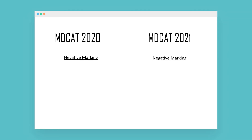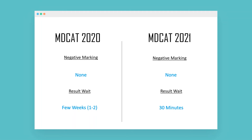On a positive note, there is still no negative marking, just like in the 2020 version. The result wait time is also much better — in 2020 you had to wait one to two weeks, but now you will get your results within 30 minutes of completing the exam. Results will be sent to you by email and also to all the institutions you plan on applying to.